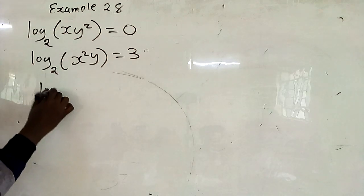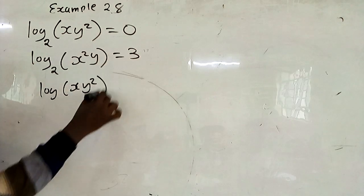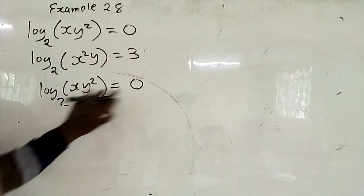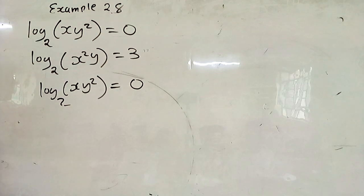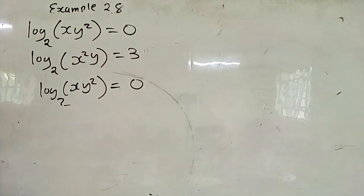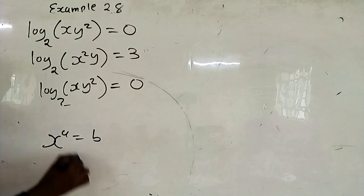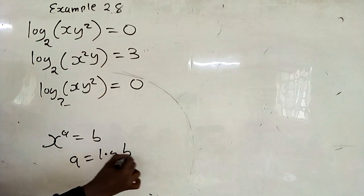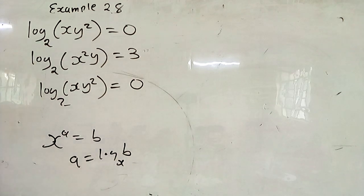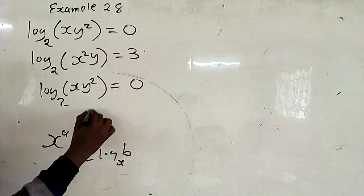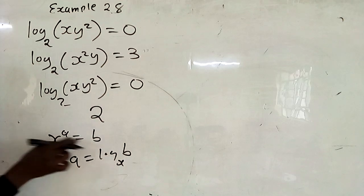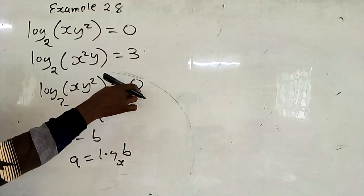So if you look at this, when you have log xy² to base 2 equals 0, you must ensure that you have the same base on either side of the equation. By definition, when you have x raised to power a equals b, then the index a is the logarithm of the corresponding number to base x.